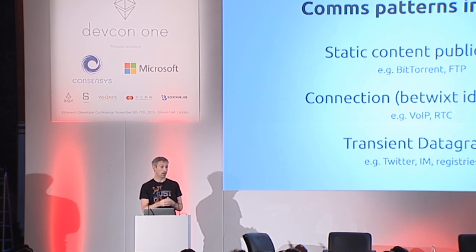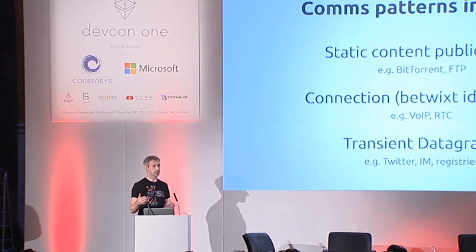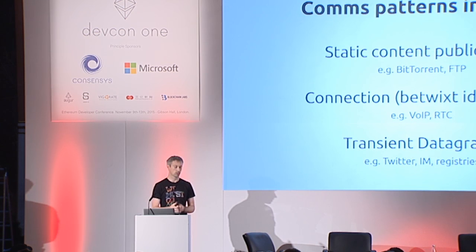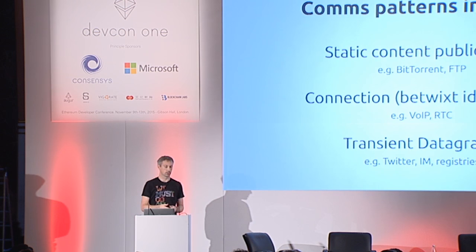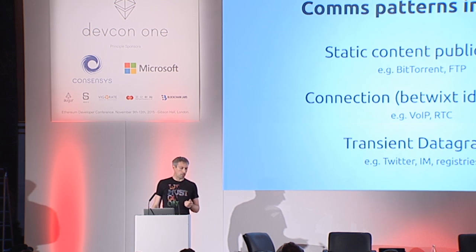We see three main paradigms for communication. The first is static publication — where we publish generally quite a lot of data and it doesn't change. It's the assets of a web page, it's the text of a story, maybe a movie. It goes up there and stays the same. This is stuff that we already have pretty decent P2P tools for: BitTorrent, IPFS, and potentially even FTP.